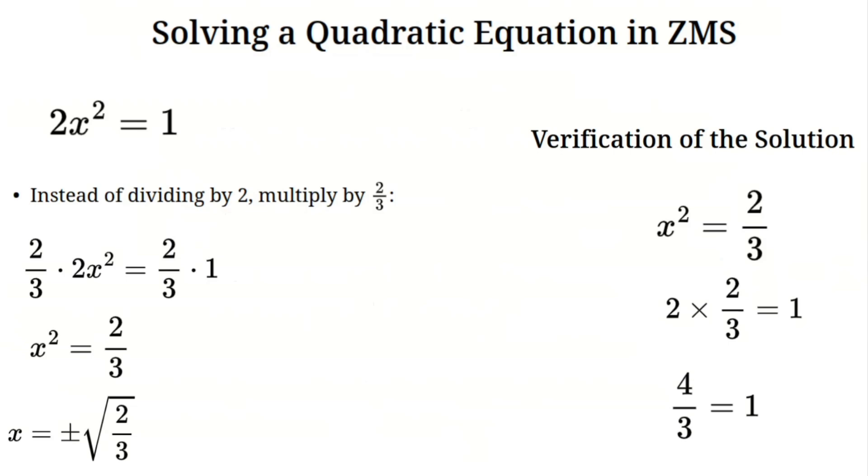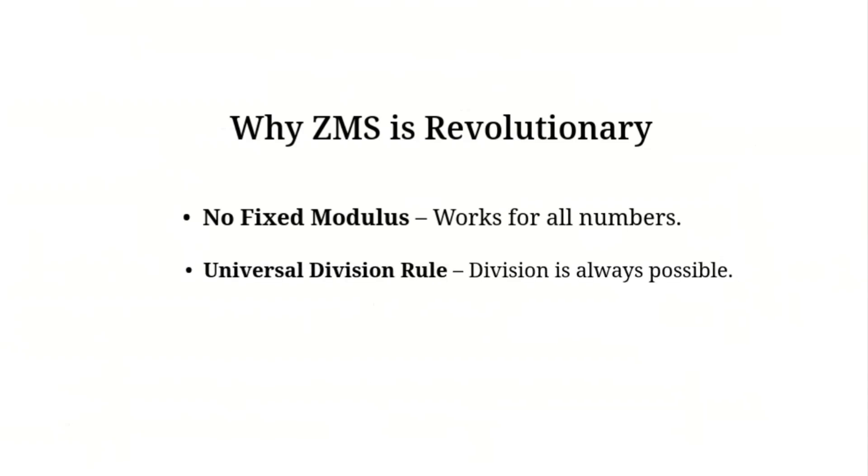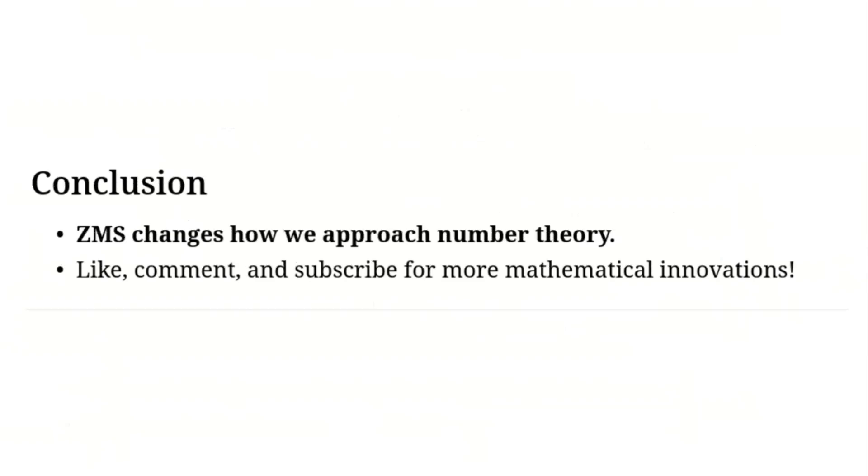Section three, why ZMS is revolutionary. As you can see, the zero modular system makes equation solving much more flexible than traditional modular arithmetic. No fixed modulus. You don't need to pick a specific number for calculations. Universal division rule. Division always works, unlike traditional modular arithmetic. Equations always have solutions. Unlike traditional systems, ZMS never makes an equation unsolvable. This opens up a whole new way of thinking about numbers.